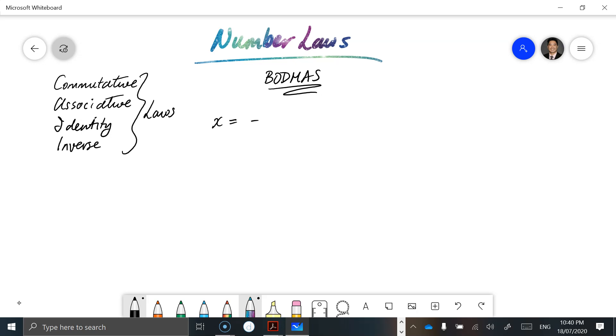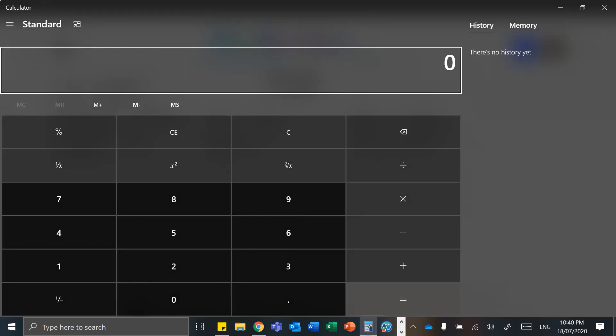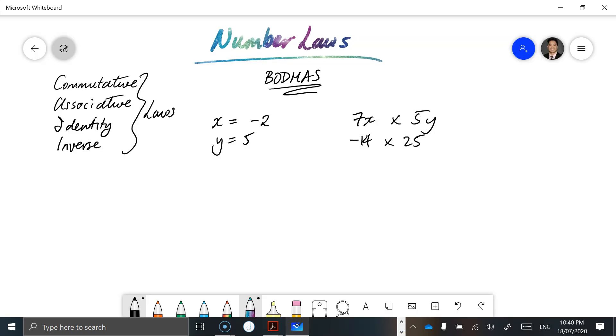So if x is equal to minus 2, y is equal to 5, and we had say 7x multiplied by 5y. So we've got 7 times x, and x is minus 2, so we've got minus 14. And then 5 times y, or y is 5, so we're going to multiply that by 25. And then after that, what you can do is go, well, what is minus 14 times 25? So we go minus 14 times 25 is equal to minus 350. So let's go back to this minus 350.